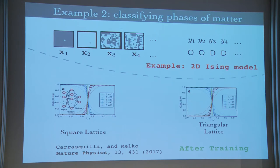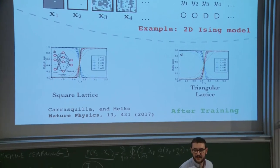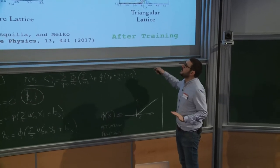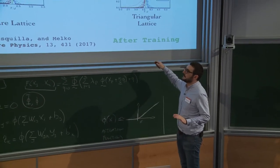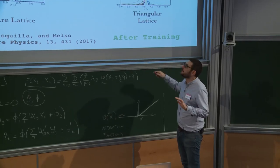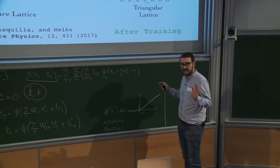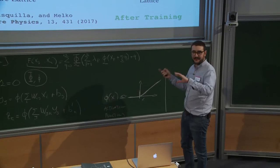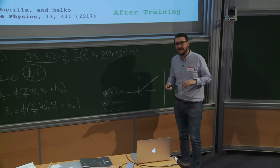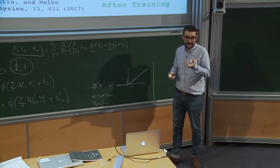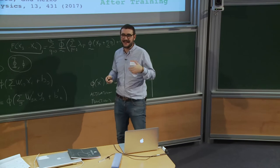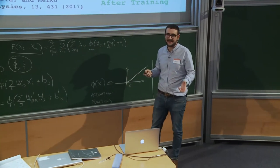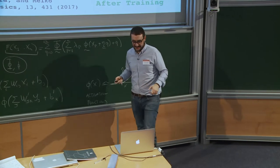The machine treats spin configurations as images and classifies them as ordered or disordered. It is not simpler to just use the magnetization directly — the point is that we want the machine to find out that the order parameter is the magnetization on its own. The training database size was likely in the thousands of samples.